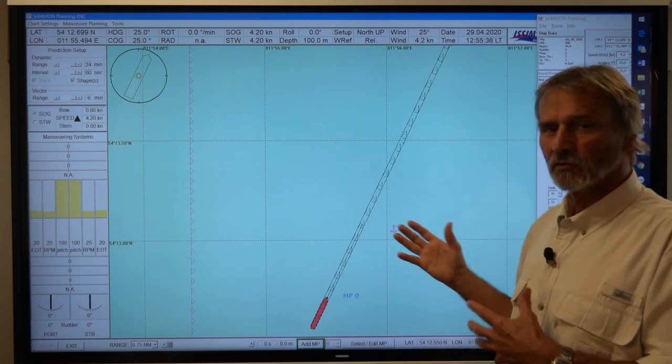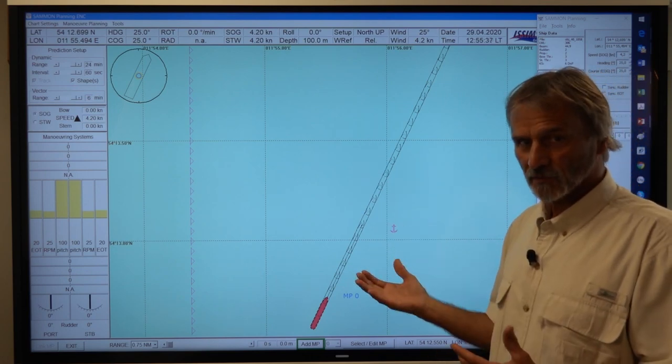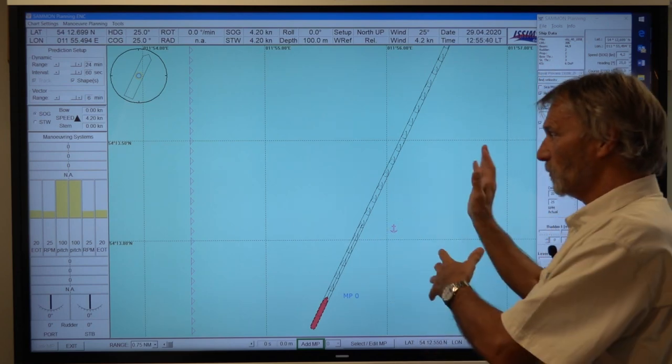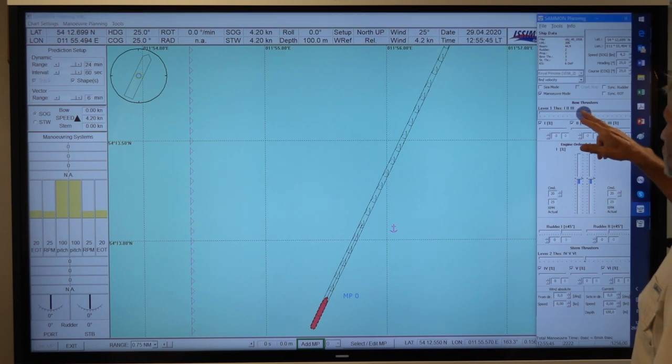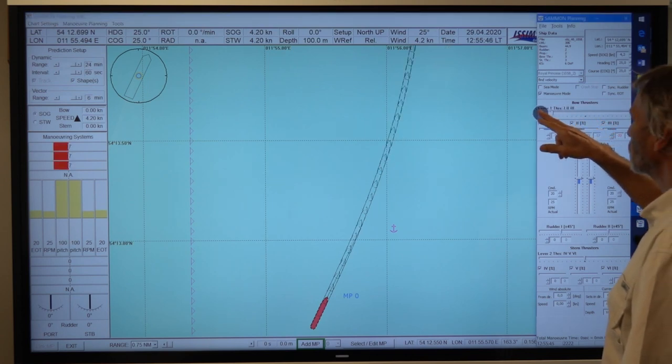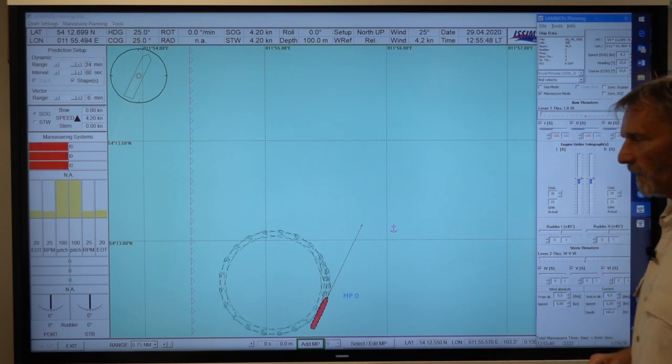We can do that by means of thrusters, bow thruster and stern thruster to push the ship in this direction. So for instance the bow thruster should be used full to port side.